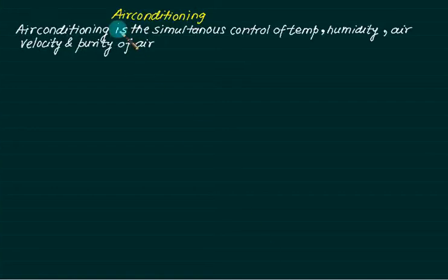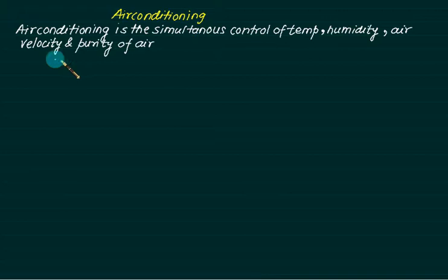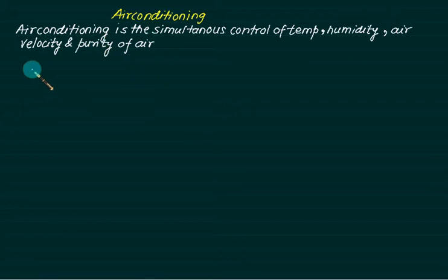Air conditioning is the science of simultaneous control of temperature, humidity, air velocity, and purity of air. Psychrometry is the study of the properties of moist air.